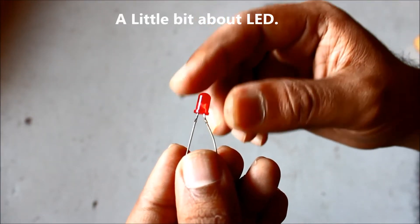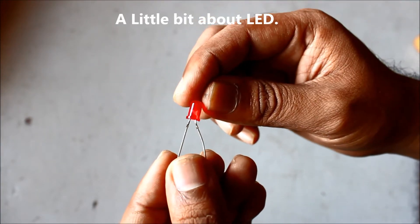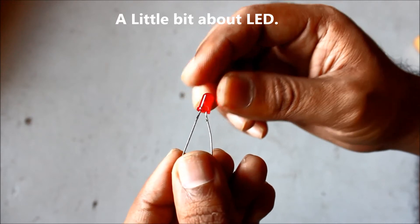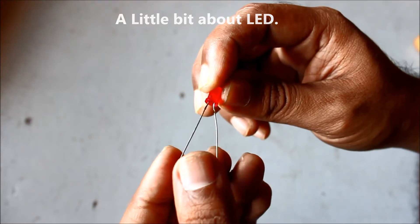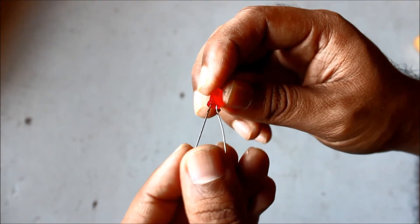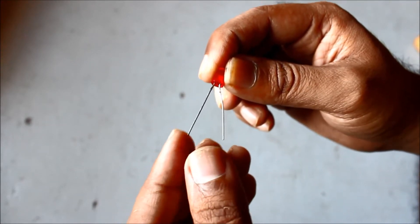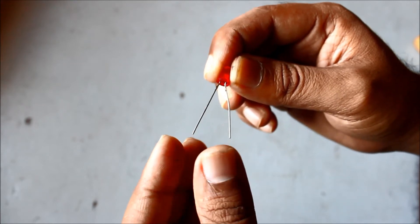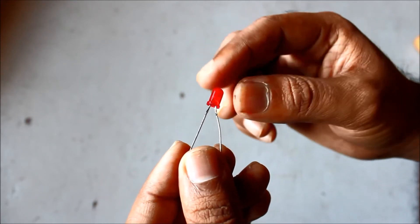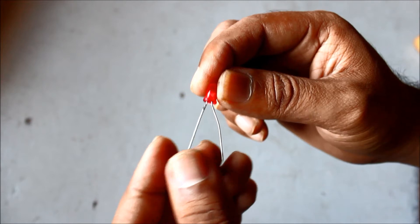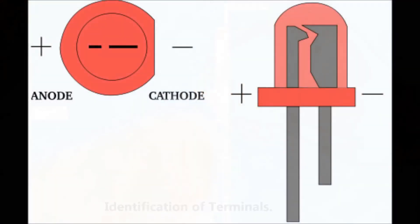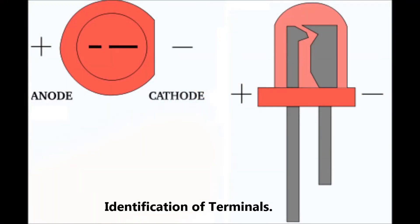Before we proceed, we have to know a little bit about the LED as well. The LED lamp basically runs on DC type of voltage, so it has two terminals, that is positive and negative terminal. Now this has to be connected into a specific arrangement, that is the cathode and the anode has to be connected to the cathode and the anode of the battery as well. To identify the different terminals, this is the diagram of an LED.